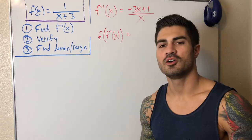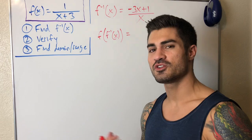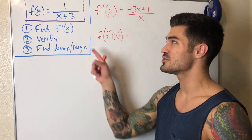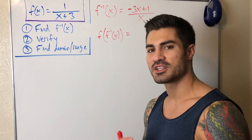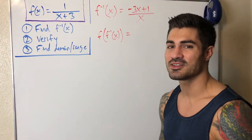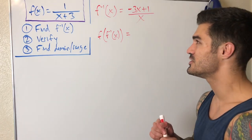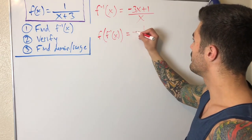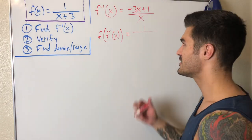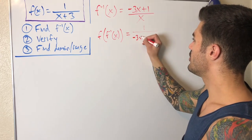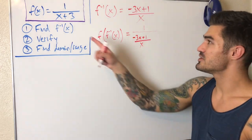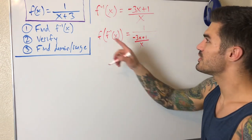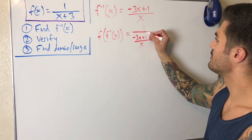Now Part 2 — verify. We verify that two functions are inverses by doing composite functions. First we plug the inverse into f as the inner function, and we're hoping to get x out. If you need practice with composite functions I have videos on that. So anywhere I see x in f, I replace it with the inverse function — I have 1 over [(-3x+1)/x] plus 3.